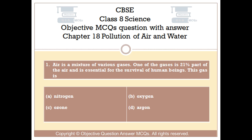Question number 1. Air is a mixture of various gases. One of the gases is 21% part of the air, and is essential for the survival of human beings. This gas is?